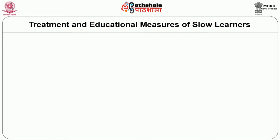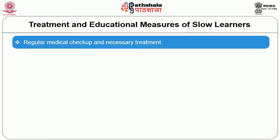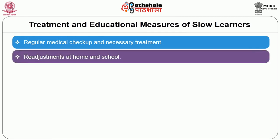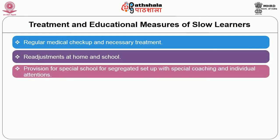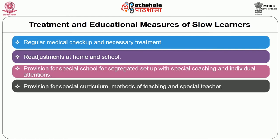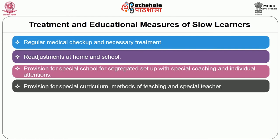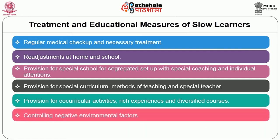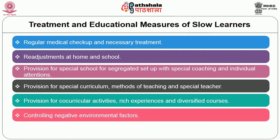Treatment and educational measures for slow learners include: regular medical check-up and necessary treatment; fee adjustments at home and school; provision for special schools in segregated setups with special coaching and individual attention; provision for special curriculum, methods of teaching and special teachers; provision for co-curricular activities, rich experience and diversified courses; controlling negative environmental factors; and taking the help of experienced educational psychologists.